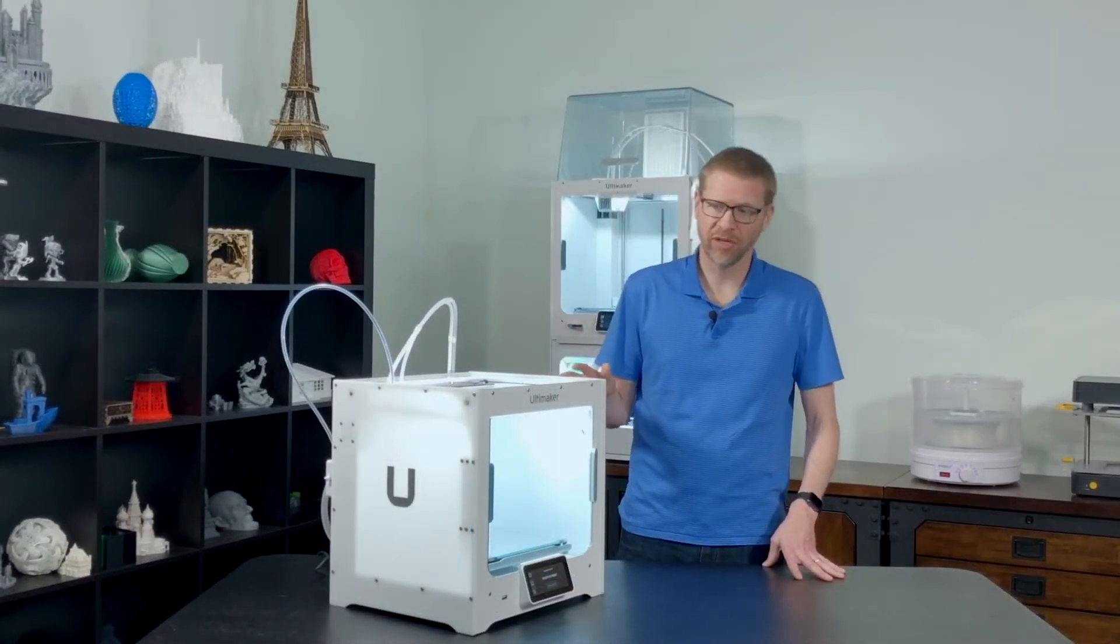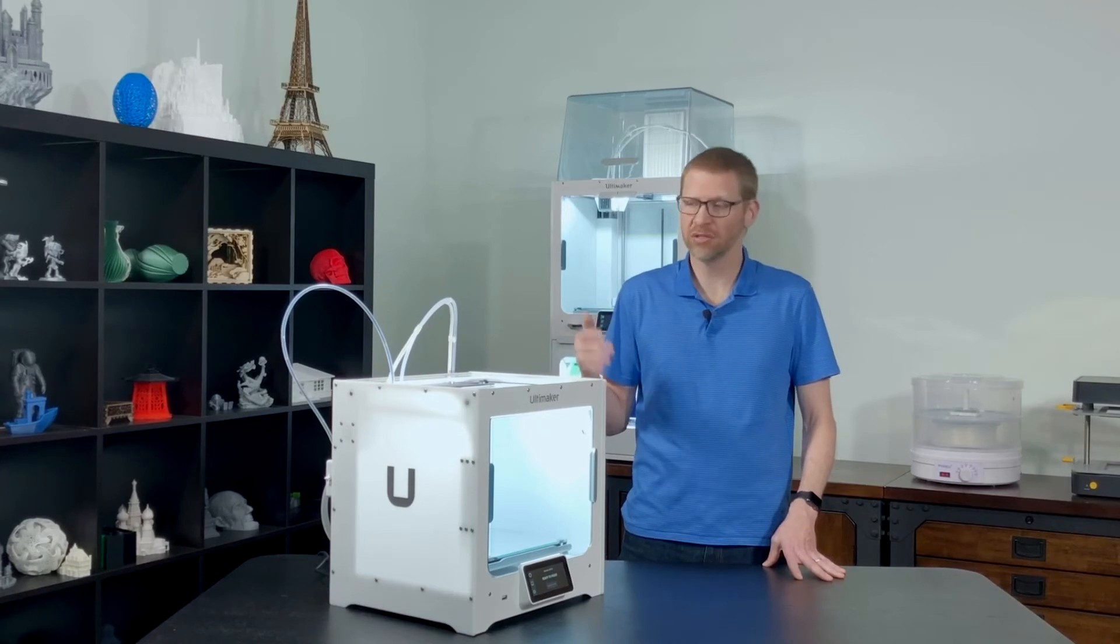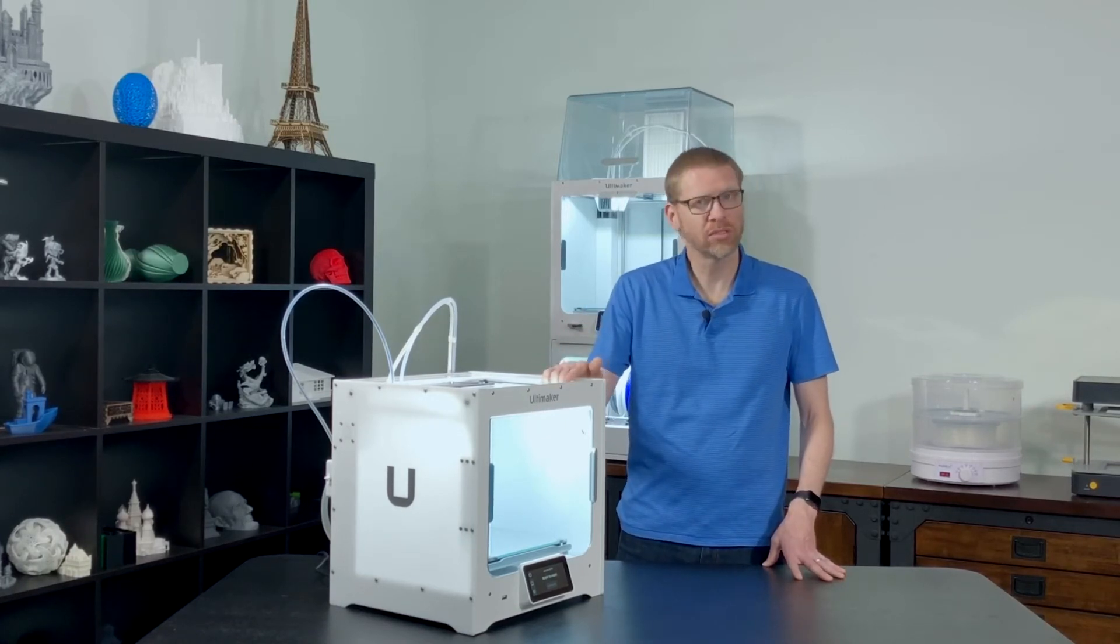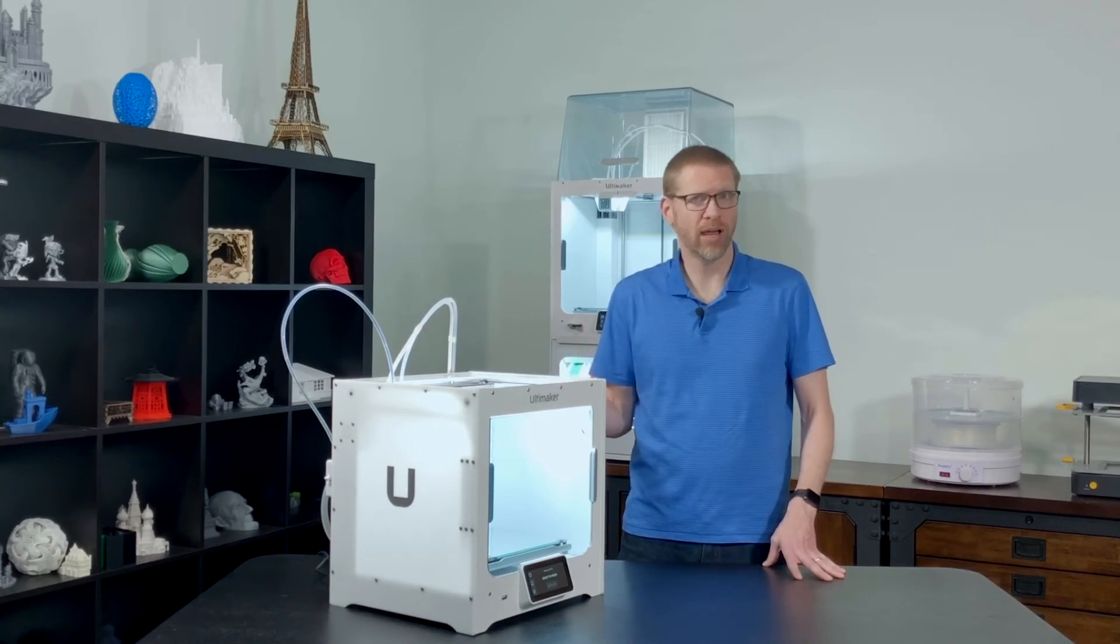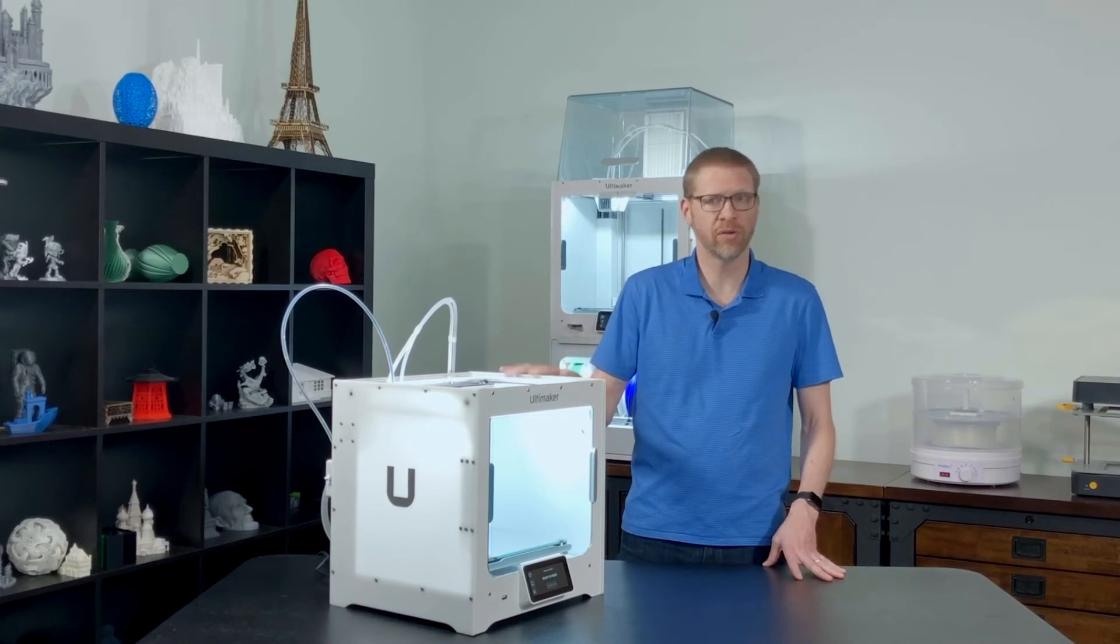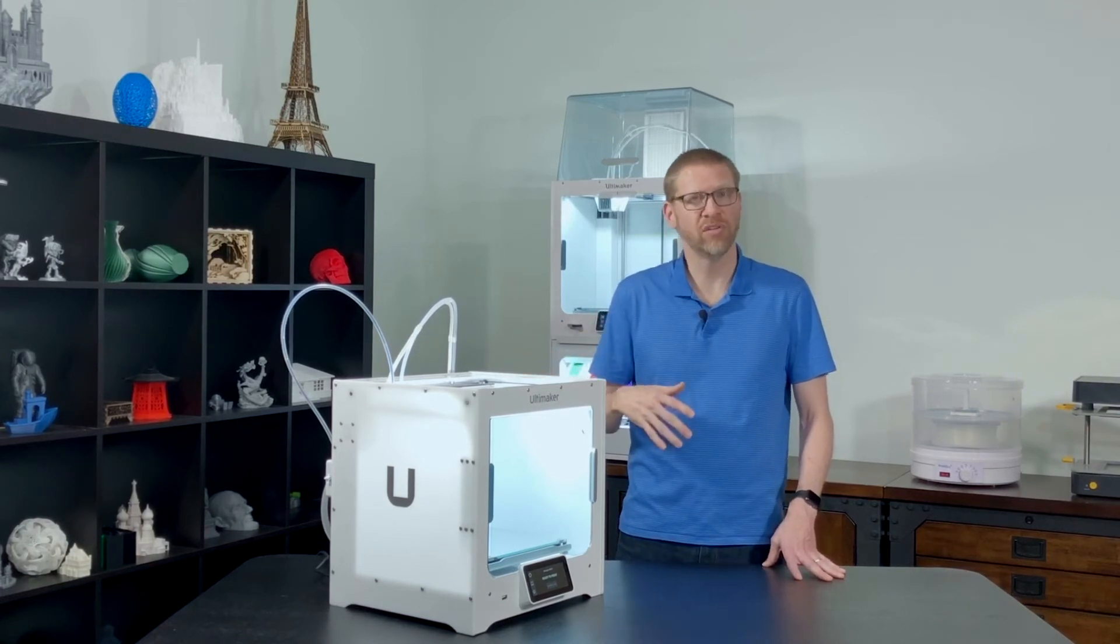The S3 also has the same great features as the Ultimaker 3 series, things like the wired or wireless network connectivity, an onboard camera to monitor your prints. There is an associated mobile app that you can put on your smartphone so that you can monitor your prints and make sure that they're going okay, and get alerts on your phone if anything happens.